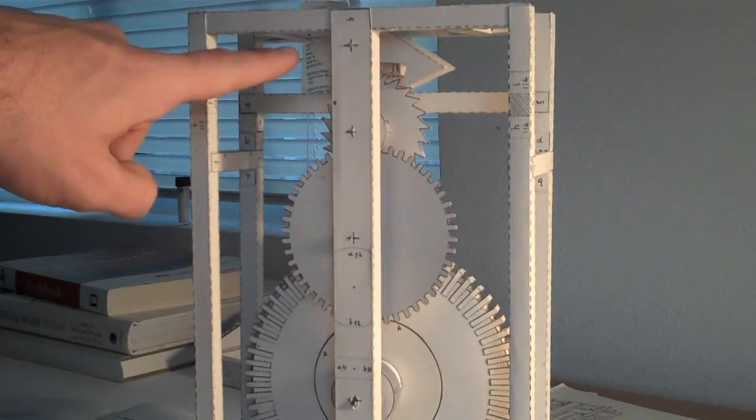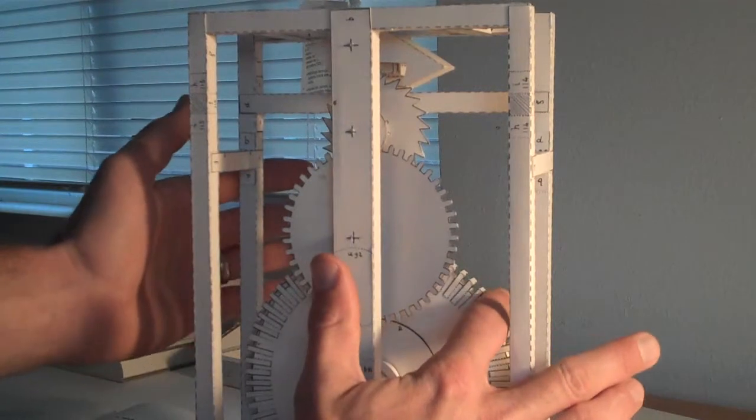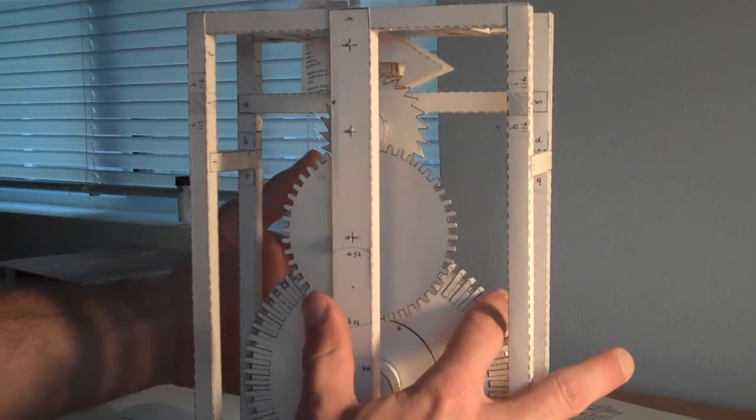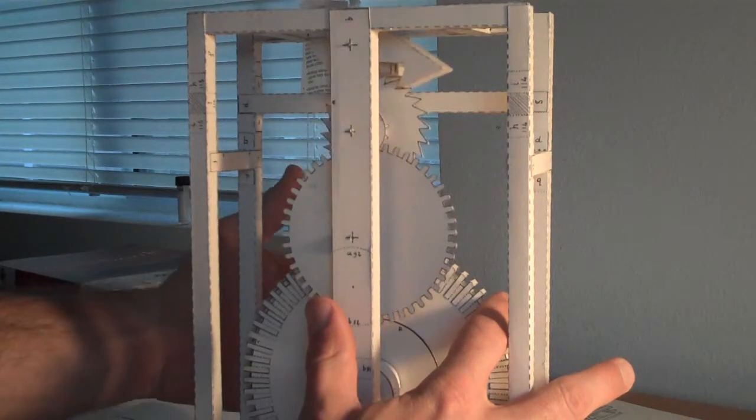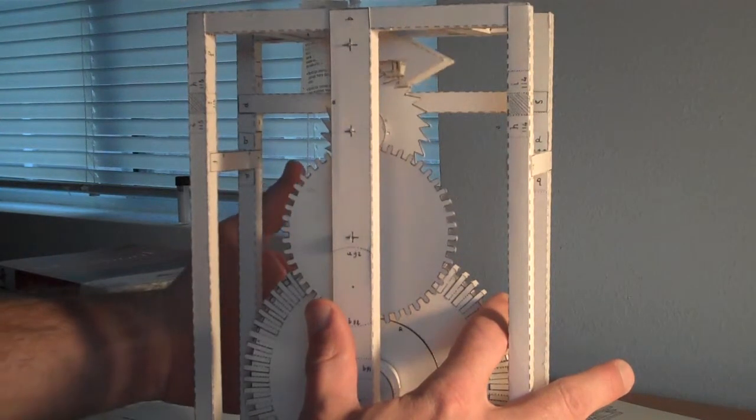But it's stopped by the escapement up here. If the motor is going like this and pulling it down, the pendulum turns this anchor, making the escapement wheel turn bit by bit by bit, and that causes the clock to turn.